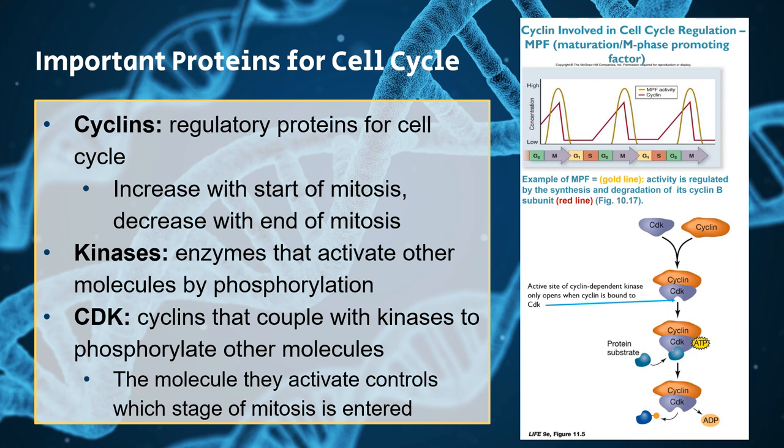Here's a picture on the right showing how cyclins increase with the start of mitosis and decrease towards the end, and how your kinases and CDKs are also involved with that — showing in the different phases of the cell cycle where those different protein levels are at. Down below, we see our CDK and our cyclin: whenever that cyclin and that CDK bind together, it will cause a conformational change, and an active site for the CDK will open up so that the molecule it needs to activate can bind, get phosphorylated, and be activated for whatever process it needs to carry out.